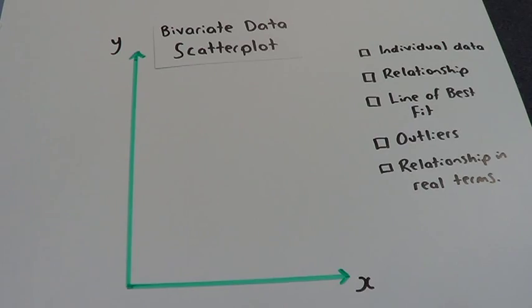We need to know about the individual data itself, the basic relationship, how to put a line of best fit on, how to identify any outliers, and then we need to describe any relationship in real terms.